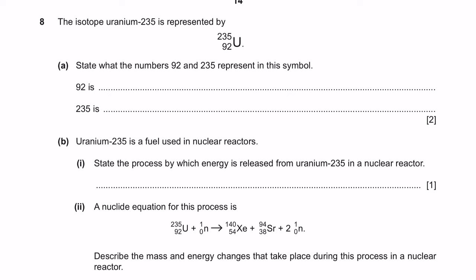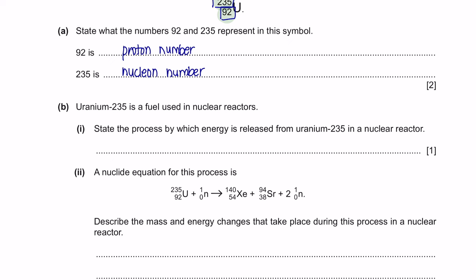Question 8. The isotope uranium-235 is represented by below. This one. Question A. State what is the number 92 and 235 represent in this symbol. This number here represents the proton number and the number at the top is its nucleon number. This question is from Chapter 5, Nuclear Physics.